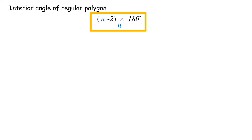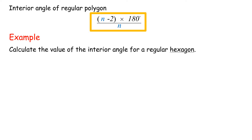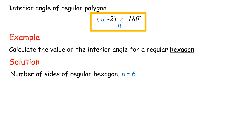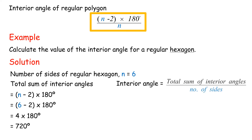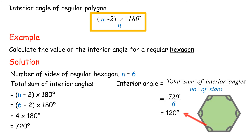Interior angle of a regular polygon equals (N minus 2) times 180 degrees divided by N. Example: Calculate the value of the interior angle for a regular hexagon. Solution: N equals 6. Total sum of interior angles equals (6 minus 2) times 180 degrees, equals 4 times 180 degrees, equals 720 degrees. Interior angle equals 720 degrees divided by 6, equals 120 degrees.